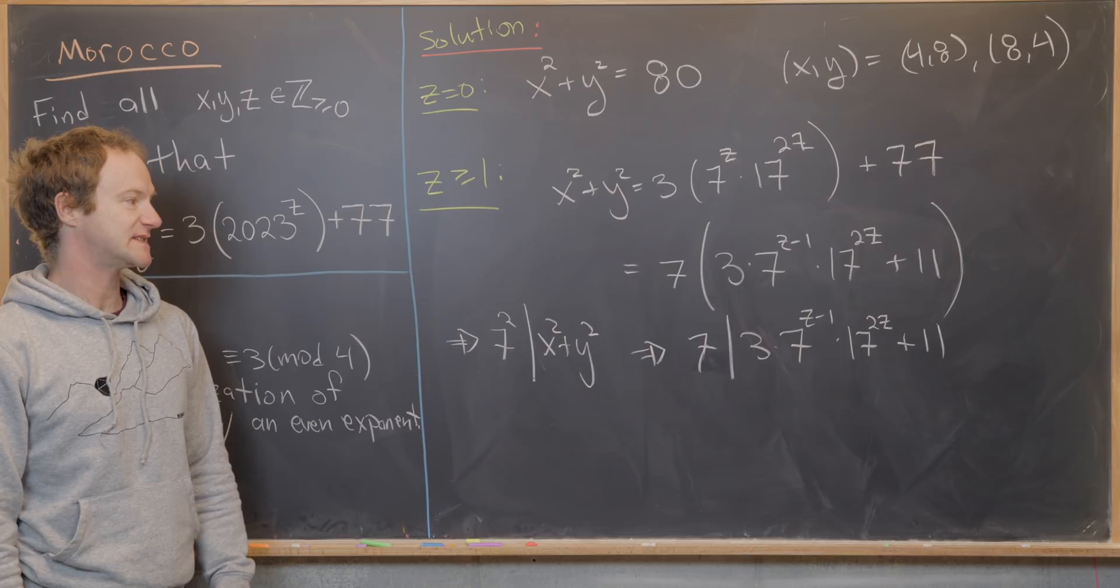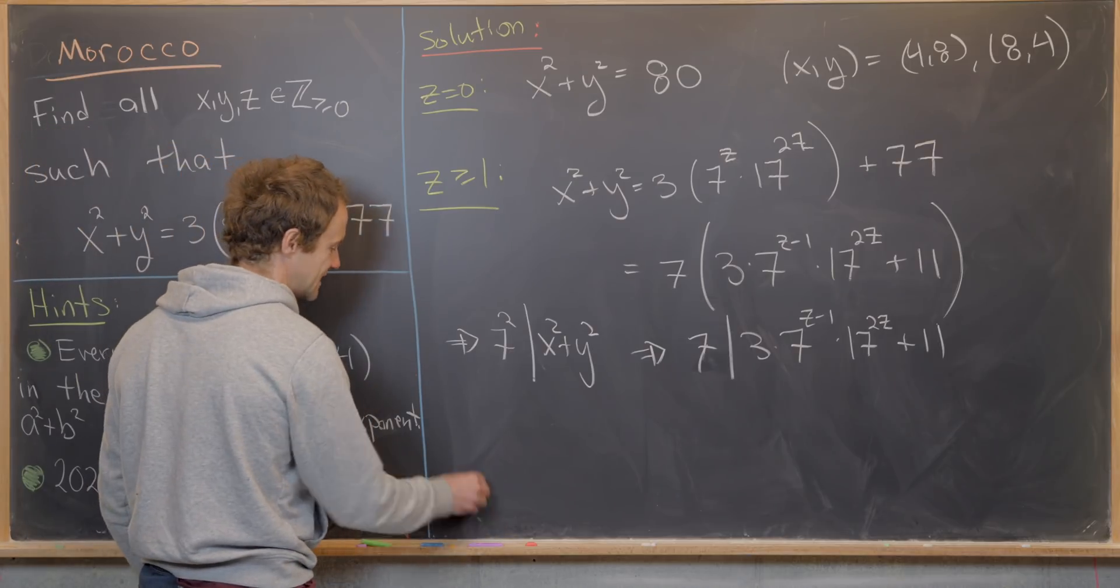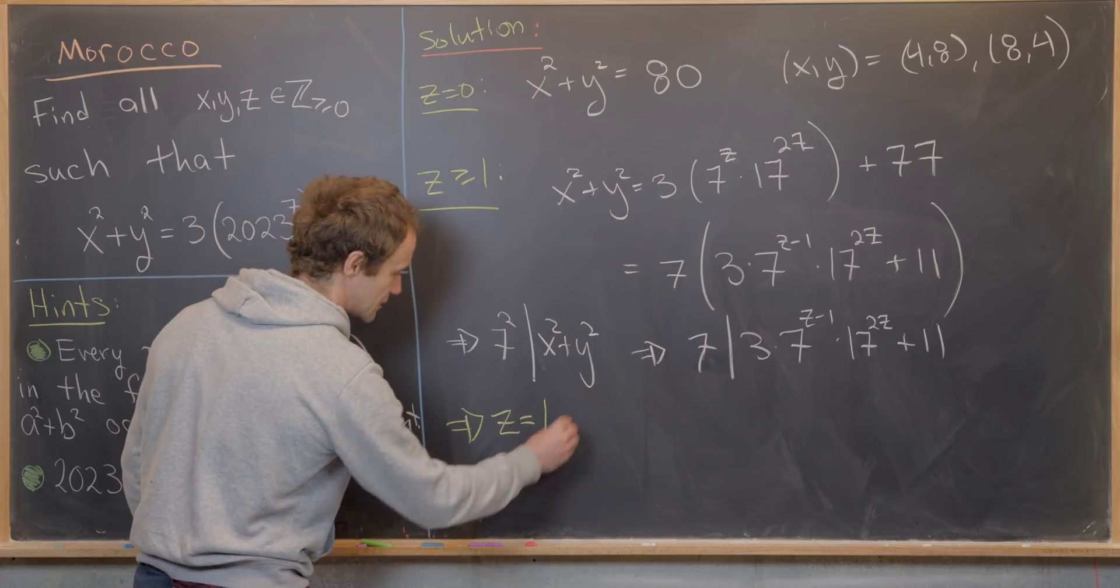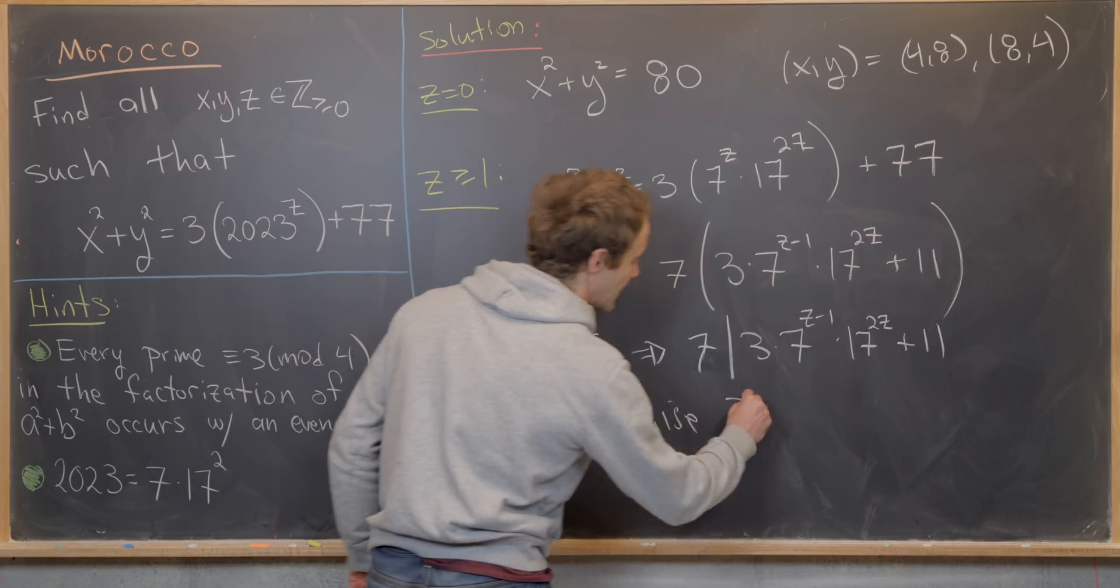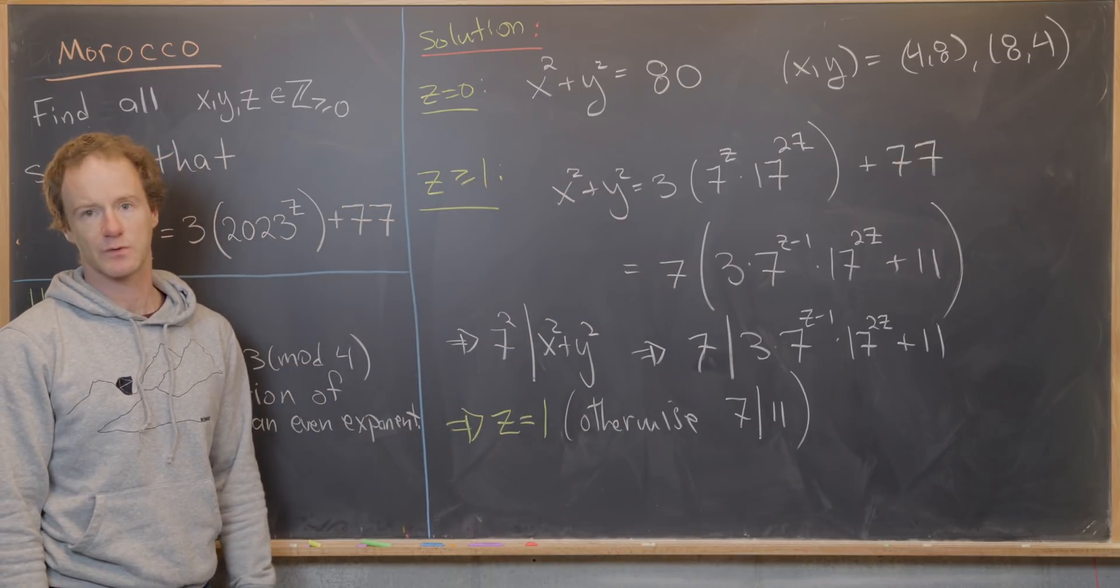Okay, but now immediately we see that this means that z has to be equal to 1. And let's see why that's the case. So I'm going to say that this implies that z equals 1. And that's because otherwise, we would have 7 dividing 11, which is clearly not true. Those are both primes.